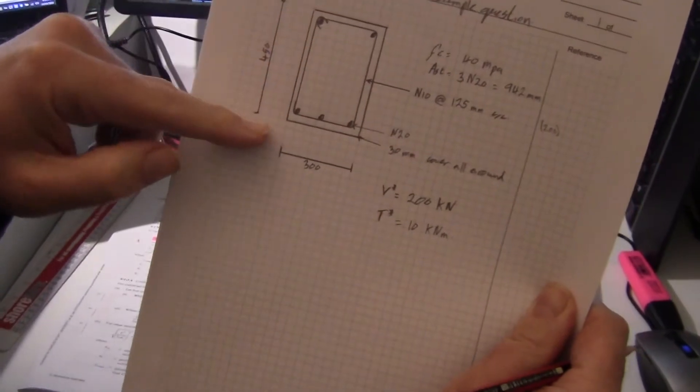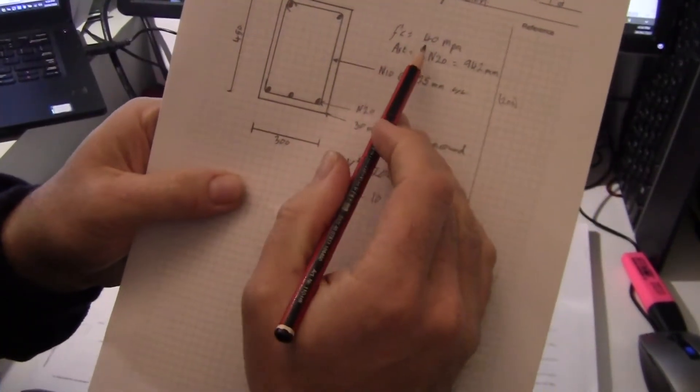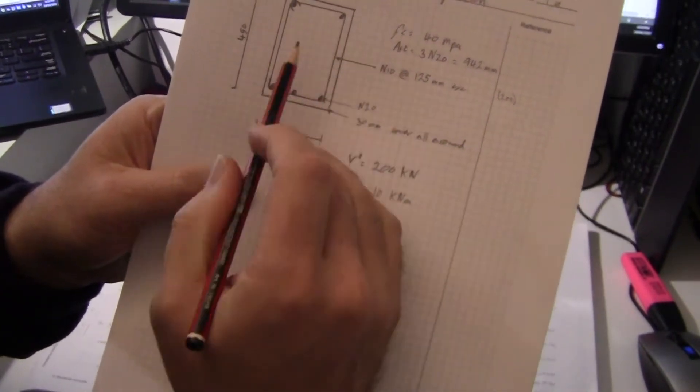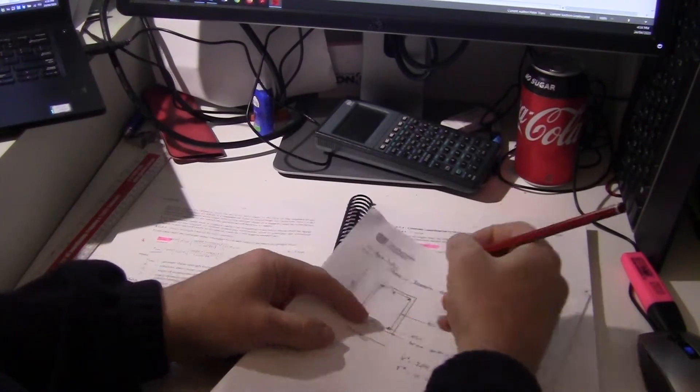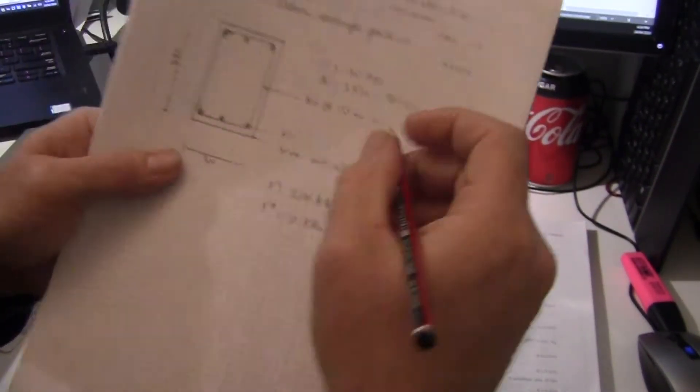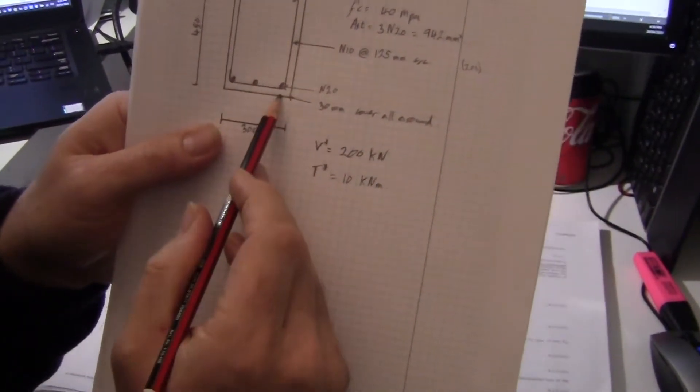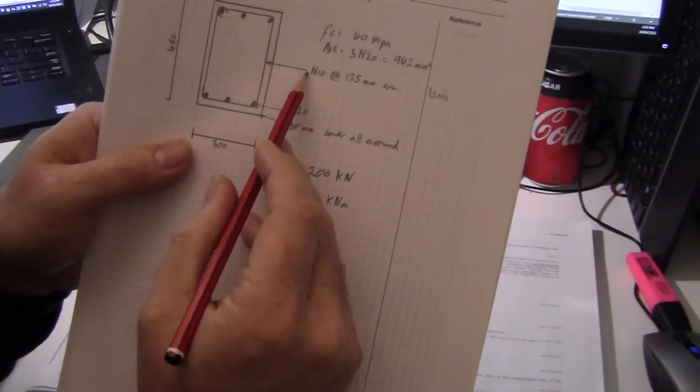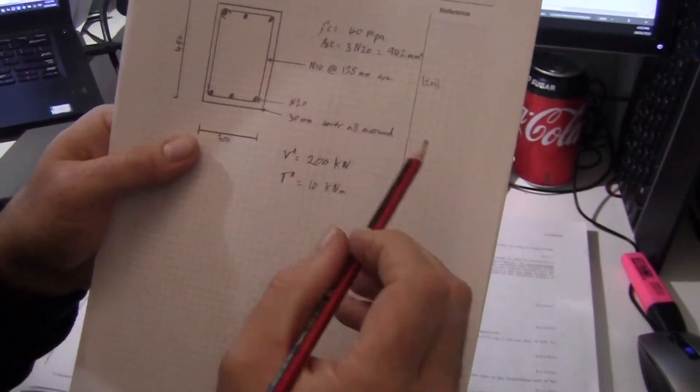We've got a beam 450 deep, 300 wide. F-C, that's the strength of concrete, is 40 megapascals. We're going to have steel at the top and the bottom. We'll have three N20s at the top, which is 942 square millimeters. We're going to have same steel at the bottom. We're going to have N10 rings at 125cc, center to center.